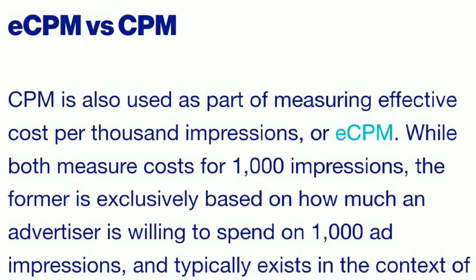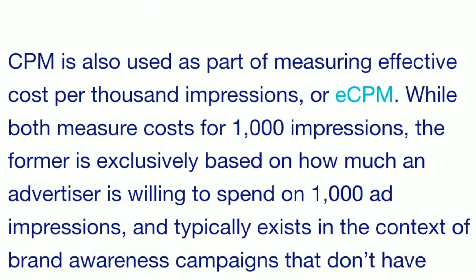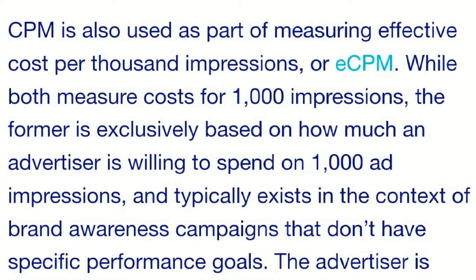What is the difference between eCPM and CPM? CPM is also used as part of measuring effective cost per thousand impressions, or eCPM. While both measure costs for 1000 impressions, CPM is exclusively based on how much an advertiser is willing to spend on 1000 ad impressions.